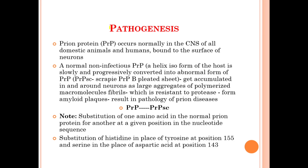Now we will discuss the pathogenesis of Scrapie. The prion protein, known as PrP, occurs normally in the CNS of all domestic animals and humans, bound to the surface of neurons. A normal non-infectious PrP, which is an alpha-helix isoform of the host, is slowly and progressively converted into the abnormal form PrP-Sc (Scrapie PrP), with beta-pleated sheets. This gets accumulated in and around neurons as large aggregates of polymerized macromolecules called fibrils, which are resistant to protease, forming amyloid plaques, resulting in the pathology of prion disease.